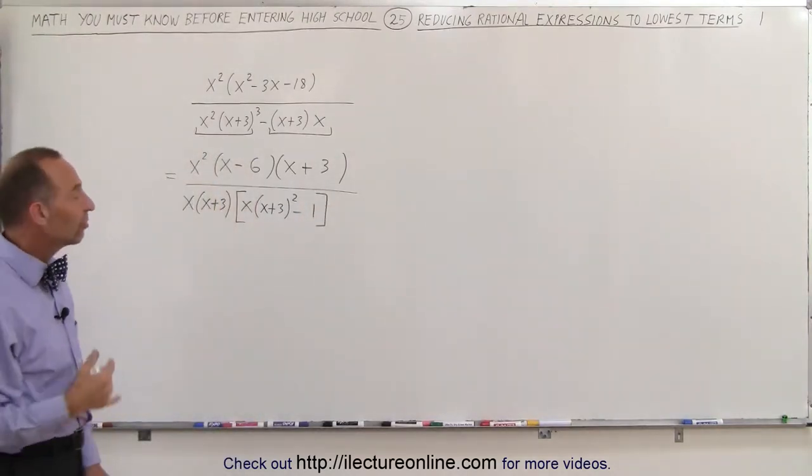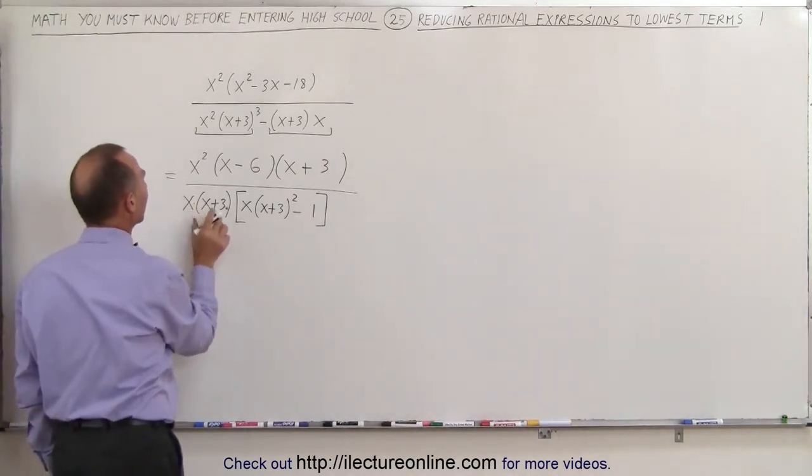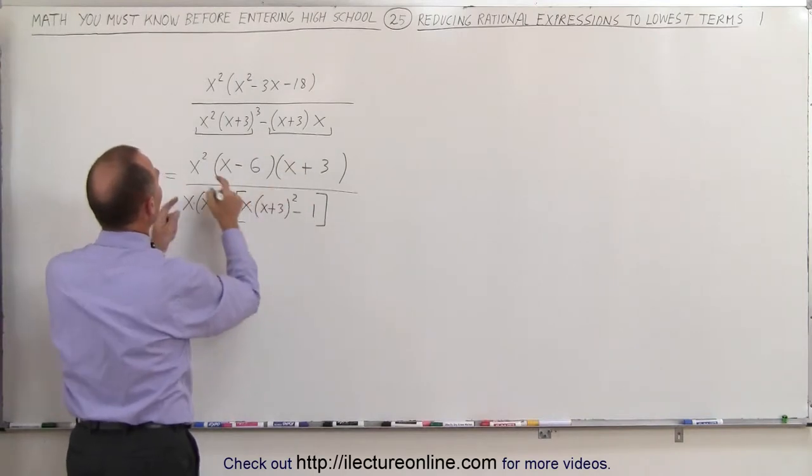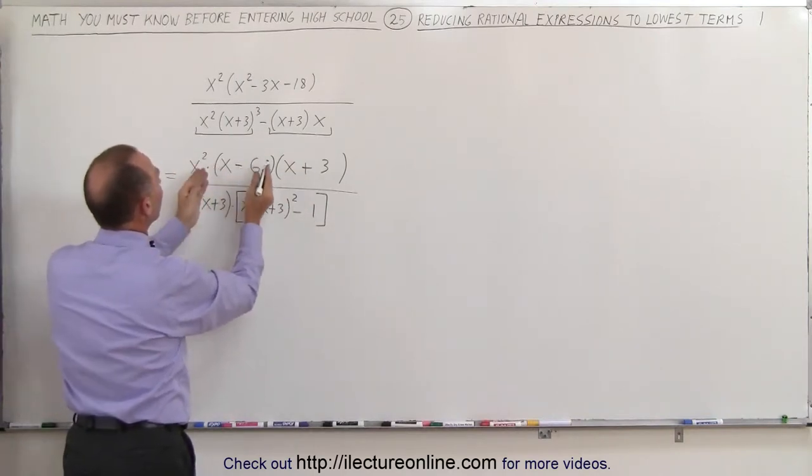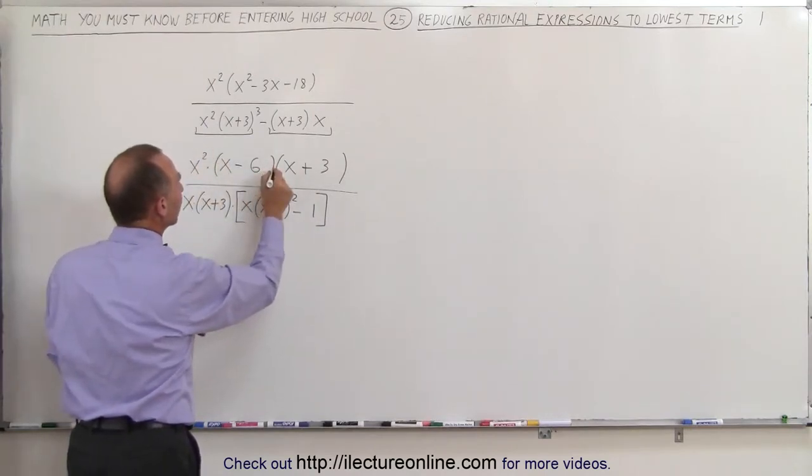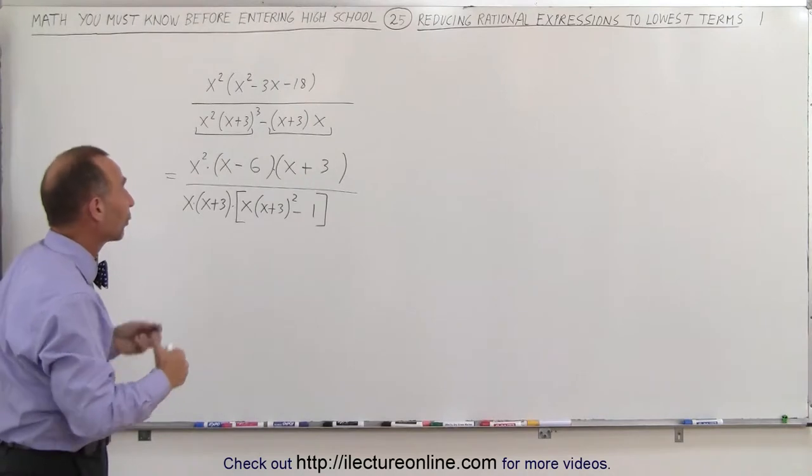Now notice that I can begin to simplify already, because here I have an x times an x plus 3 times this quantity right here, and here I have an x squared times an x minus 6 times an x plus 3. As long as these things are multiplied together, I can start simplifying or factoring or reducing.